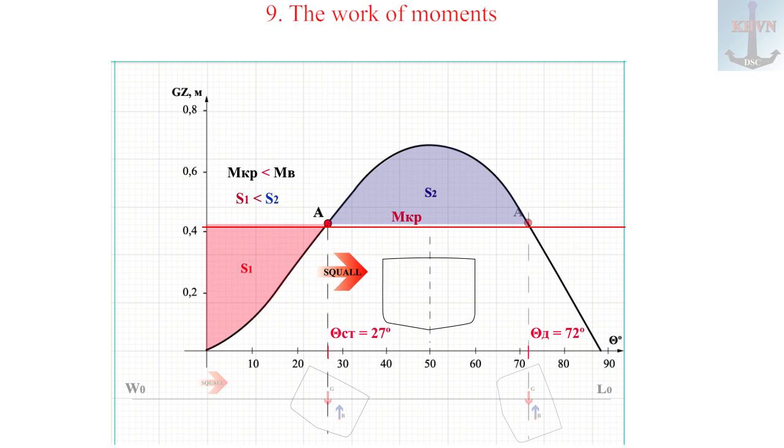In the IMMO Code for Intact Stability 2008, tightens the control measures for vessel stability, and the calculation of the minimum criteria is carried out from the worst position when the vessel is already healed in the direction of dynamic load. Why this option is considered the worst will be discussed later.